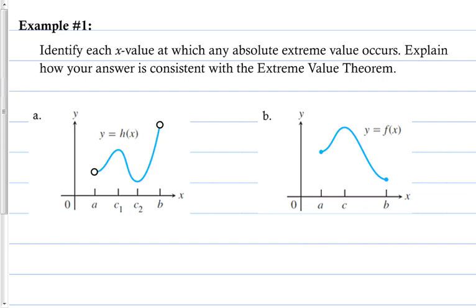Example 1: Identify each x value at which any absolute extreme value occurs. We're finding absolute extrema only, not relative or local. Then explain how your answer is consistent with the Extreme Value Theorem. Recall: if f is continuous on a closed interval [a, b], then f has both a minimum and a maximum on that interval.